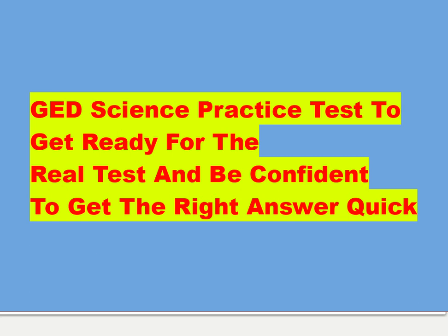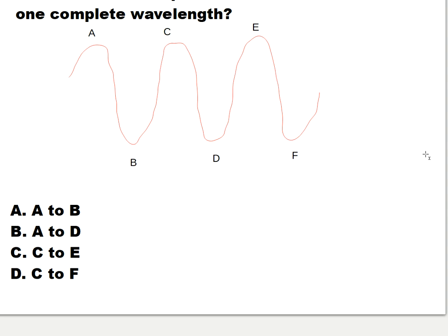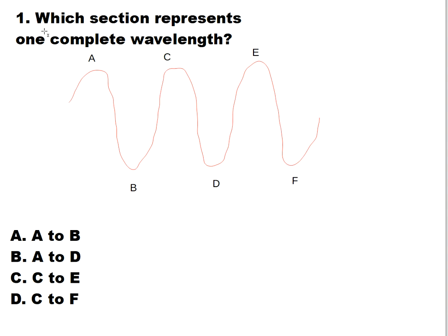Let's get started. I made this drawing of a wavelength through a web link. This is a wavelength of a sound wave. Question one: which section represents one complete wavelength? Is it A: E to B, B: A to D, C: C to A, or D: C to F? The answer is letter C, C to E — that's a complete wavelength.